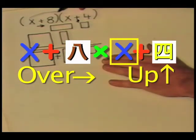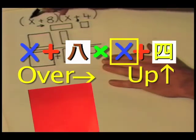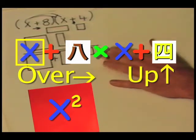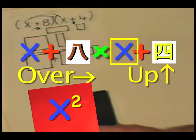We must be over x plus 4 up x plus 8. We will identify our first piece over x up x. Over x up x, of course, is x squared.